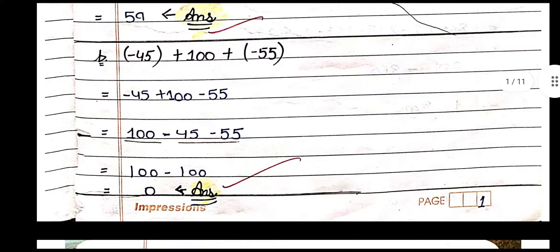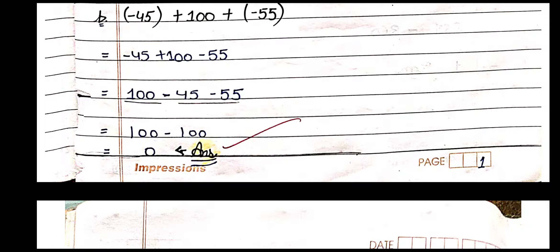One more example: minus 45 plus 100 plus minus 55. Minus 45 is negative and minus 55 is negative. First step: open the bracket — minus 45 plus 100 minus 55. Third step: rearrange — 100 is positive, minus 45 and minus 55 are both negative. Underline the positive numbers.